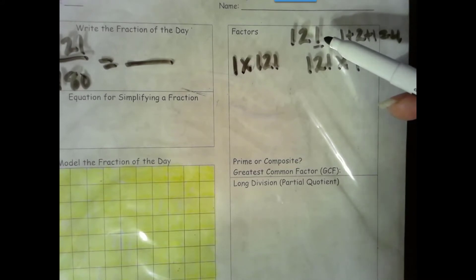We try 7. 7 times 10 is 70. 77, 84, 91, 98, 105, 112, 119, 126. 121 is not in that list, so 7 is not a factor.